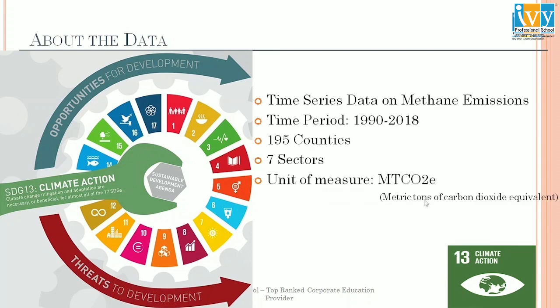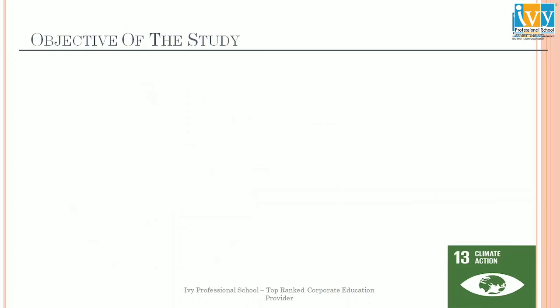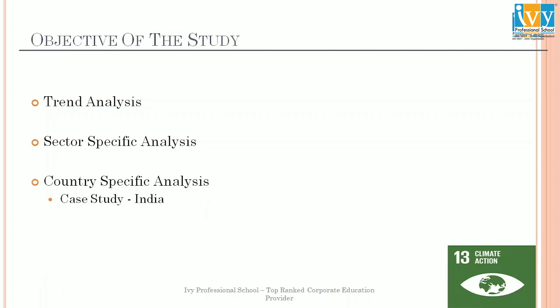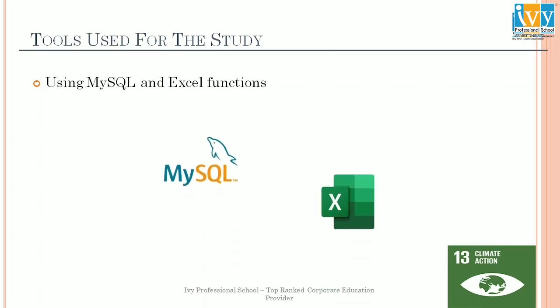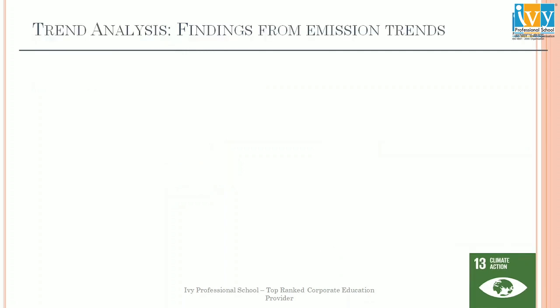The unit of measure is metric tons of carbon dioxide equivalent, which is the standard one. My objective of the study is trend analysis, which is a classic first step for any time series data. Next, moving on to sector-specific analysis — that is, sector-specific contribution to methane emissions — and then country-specific analysis where I have also incorporated a case study on India. The tools I used are MySQL and Excel functions, along with some secondary research.